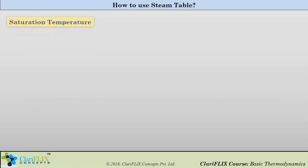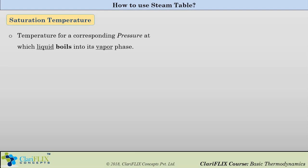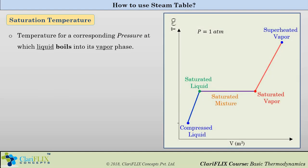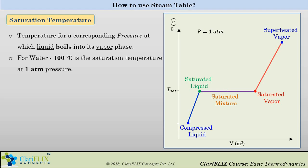Let us begin with saturation temperature. Saturation temperature is the temperature for a corresponding pressure at which liquid boils into vapor phase. Here is the T-V diagram, and this line is the constant pressure line at one atmospheric pressure. The green dot is the saturated liquid state and the red dot is the saturated vapor state, and on that horizontal line the phase change process is taking place. The temperature at saturated liquid state is the saturation temperature — specifically, for water, 100 degrees Celsius is the saturation temperature for one atmospheric pressure.